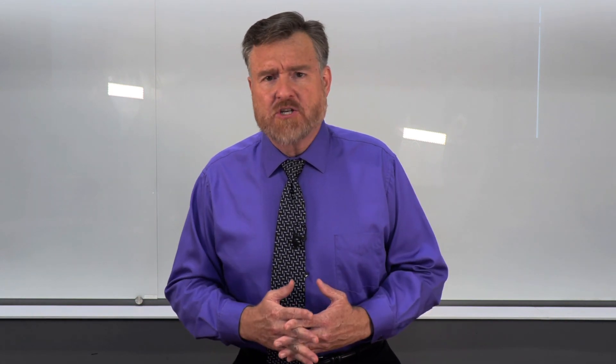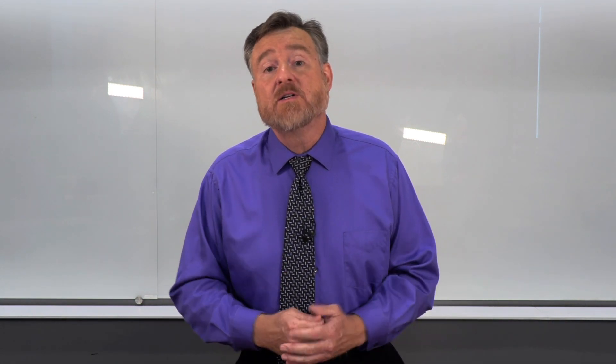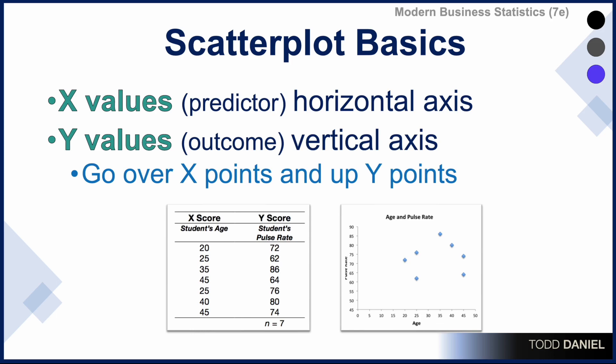When I see the totality of the data, there's not much of a relationship there. However, I could still mathematically define a regression line. The regression line would move through the middle of these dots, giving me an approximation of the relationship between age and pulse rate.